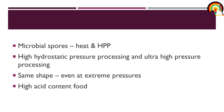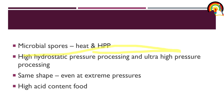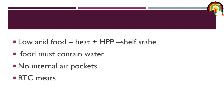Microbial spores can be killed either by the application of heat or without it. This high pressure processing is also known as high hydrostatic pressure processing or ultra high pressure processing. The same shape of the product is maintained even at extreme pressures because pressure is applied uniformly to all parts of the product. HPP is more suitable for high acid content food; for low acid content food, heat should also be applied along with high pressure processing.